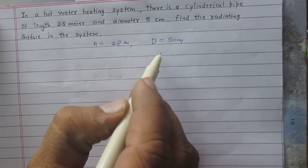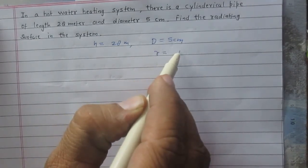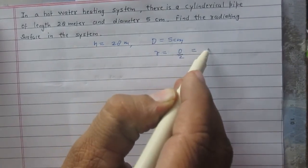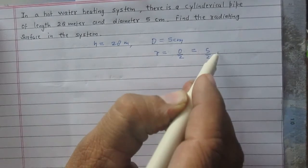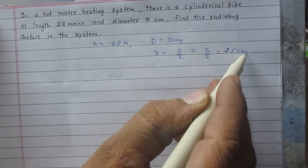We know that radius of the base of the cylinder is just half of its diameter. So its diameter is 5 centimeter, radius is 5 by 2, which is 2.5 centimeter.